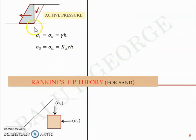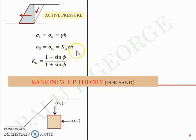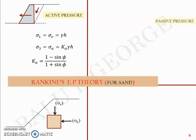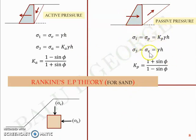For active pressure: sigma_1 major is the vertical stress, sigma_3 minor is the active pressure, and Ka — the coefficient of lateral pressure in the active condition — is defined by Rankine as (1 − sin φ) / (1 + sin φ), where φ is the angle of internal friction. Likewise, in the passive pressure case, the major principal stress is the passive pressure and minor is the vertical. Kp — the coefficient of lateral earth pressure in the passive case — is the reciprocal of Ka, giving Kp = (1 + sin φ) / (1 − sin φ).